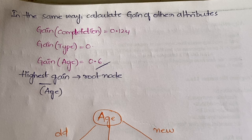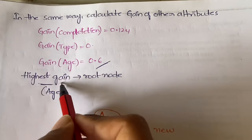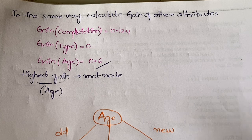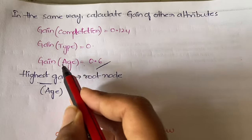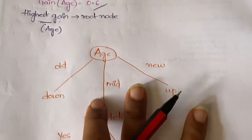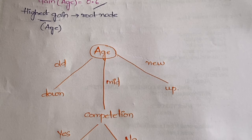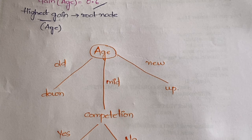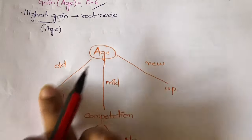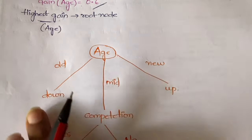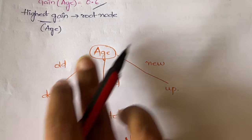The attribute having the highest gain will be elected as the root node. Here, the attribute with highest gain is age, so you need to take age as the root node. Age has three values: old, mid, and new. You're going to classify into three branches—old, mid, and new.